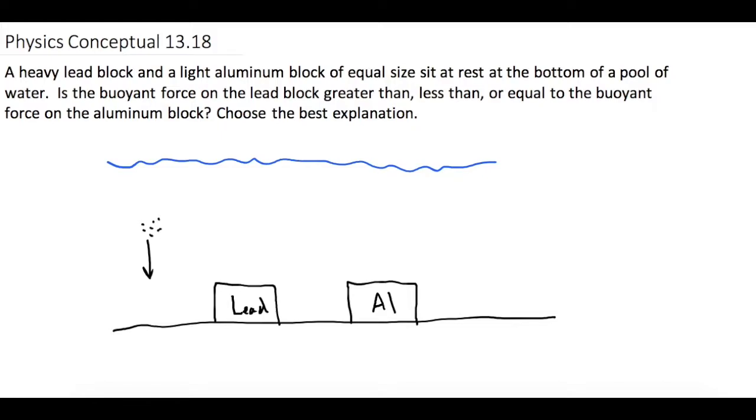So gravity is squishing all these guys together. And so, since they're all squishing together, they're all pushing on each other. And so if we stick something in the middle of these, like this lead block and aluminum block, the water is going to still push on them as if it was water.